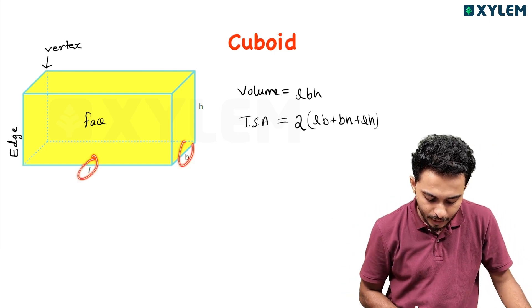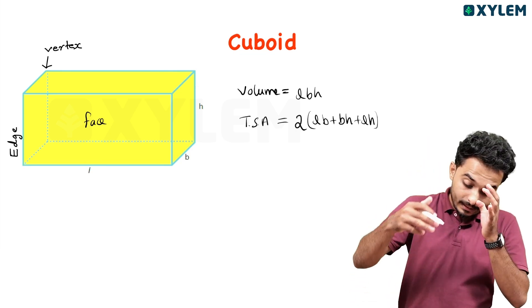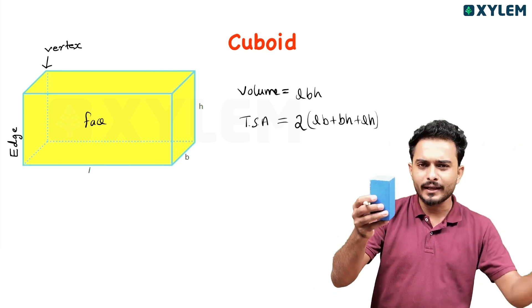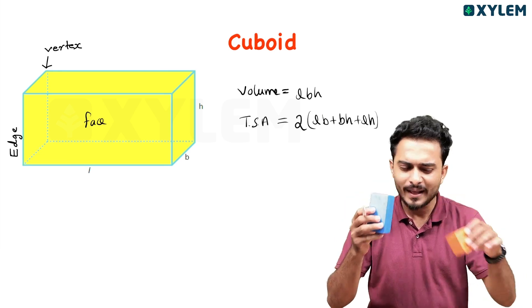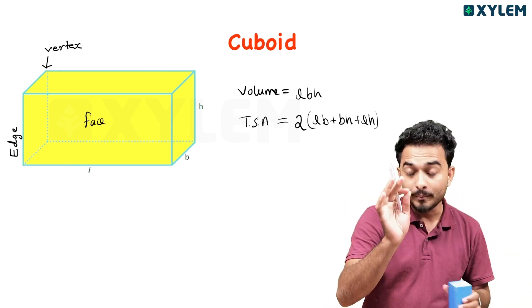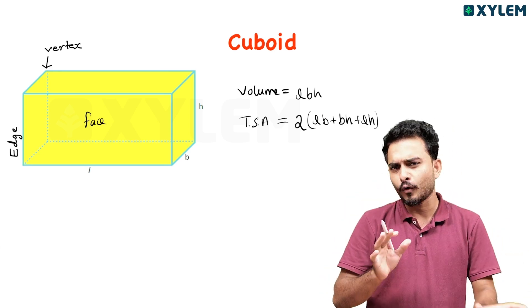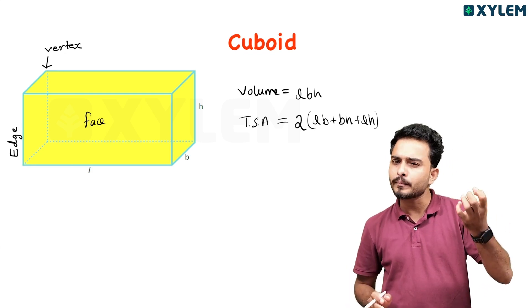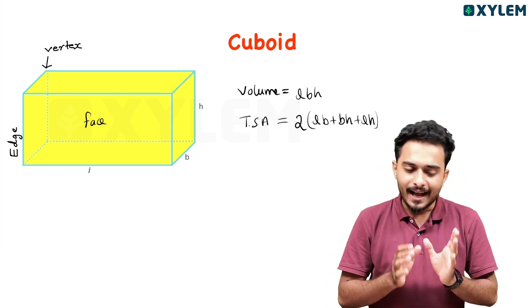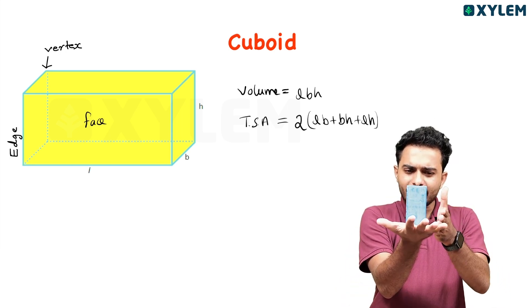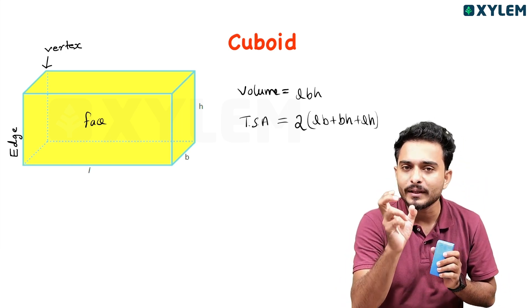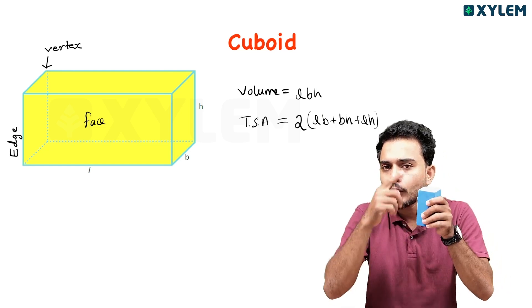This is the length — L, B, H. We are looking at the volume here. The volume is base area into height. This is a regular shape.